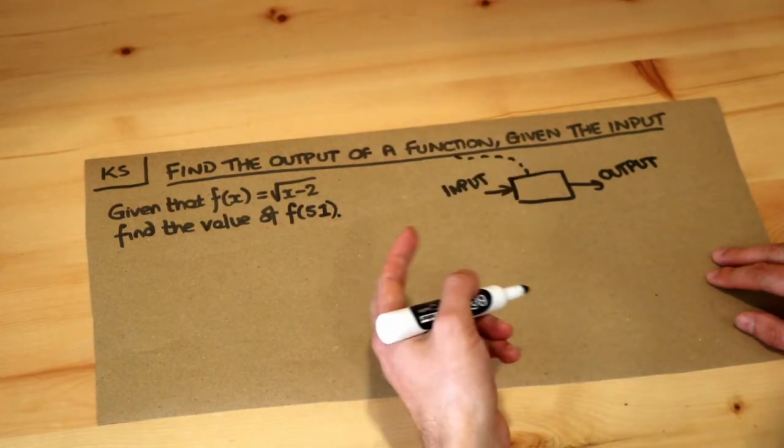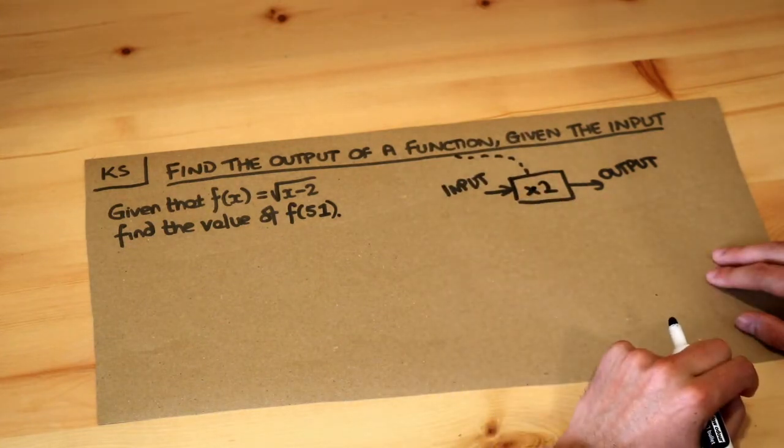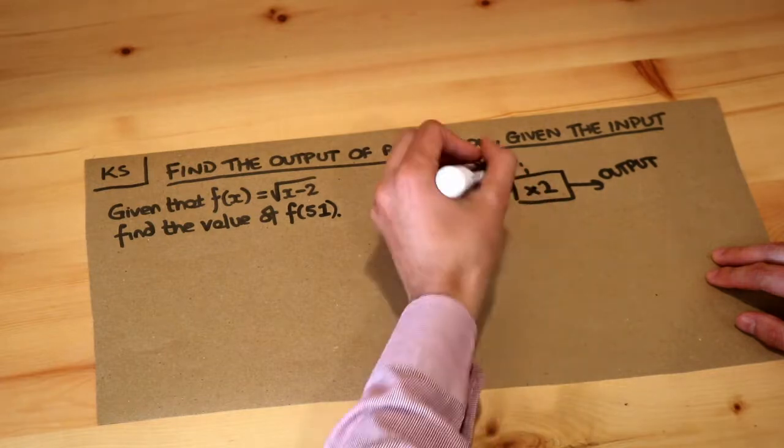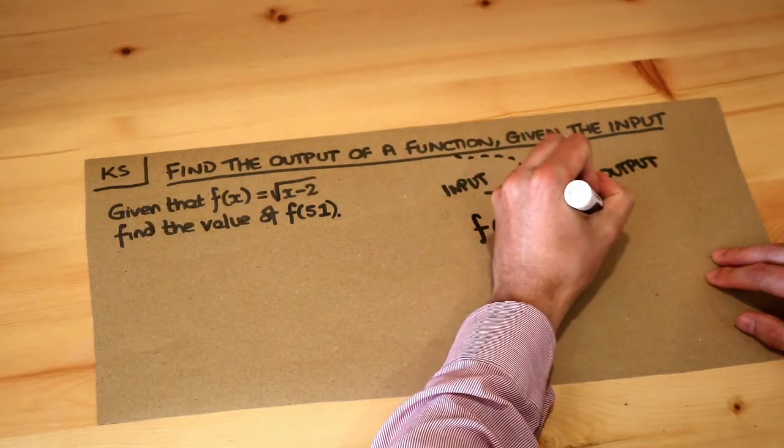So for example, your function could do something really simple like multiply the input by 2 and spit out the output. Now how would we write this? This particular function we would write as f(x) = 2x. And I'll break down what I mean by this.